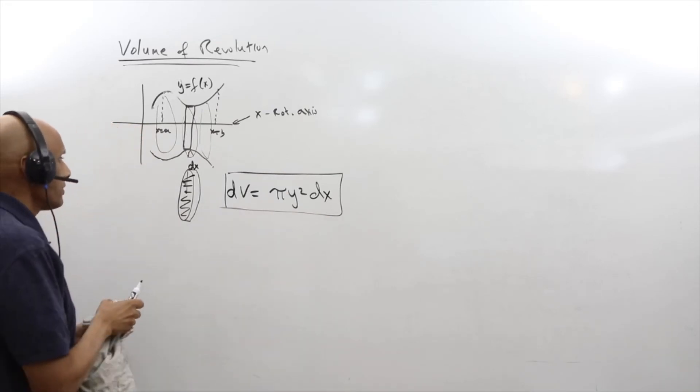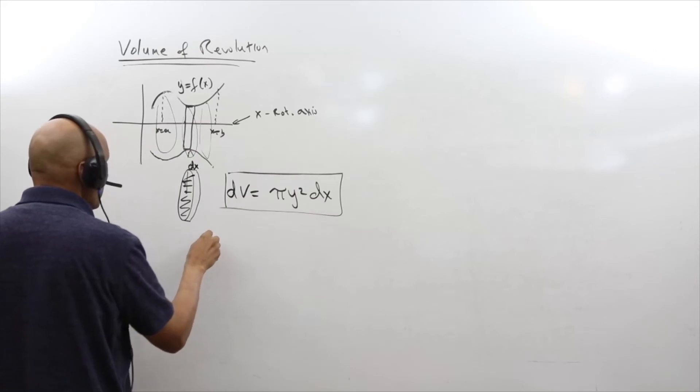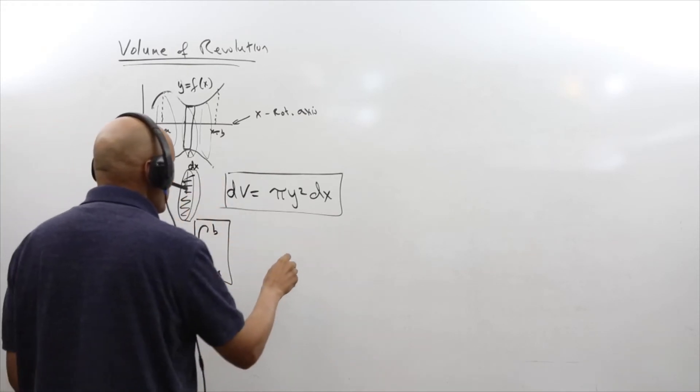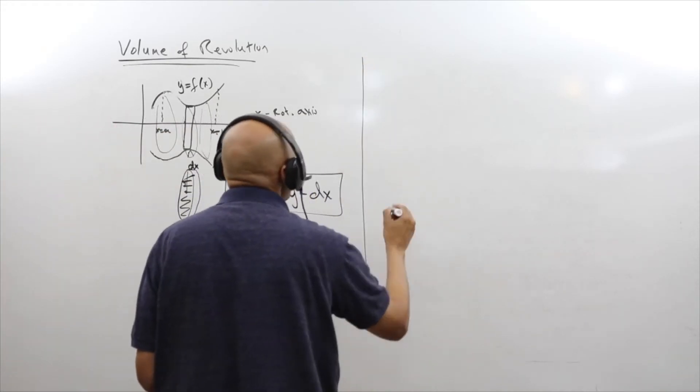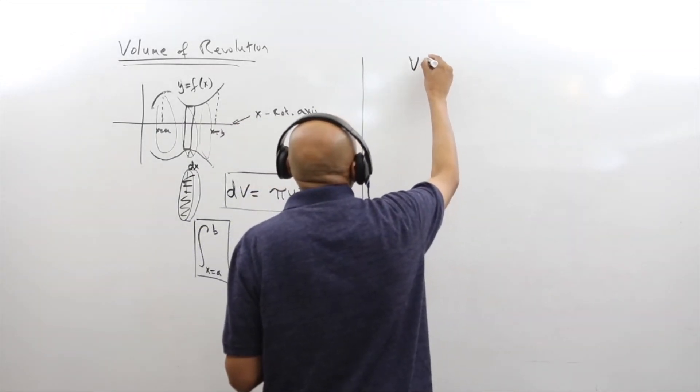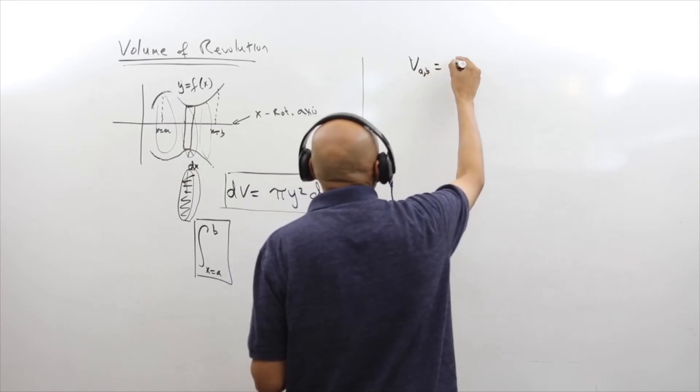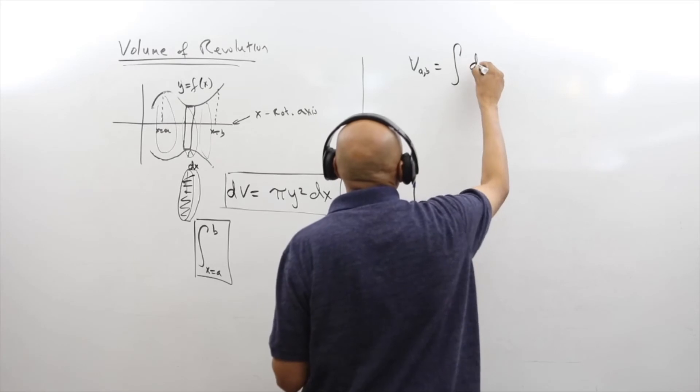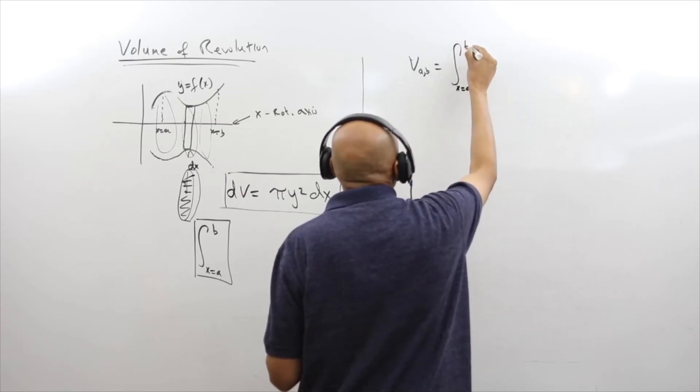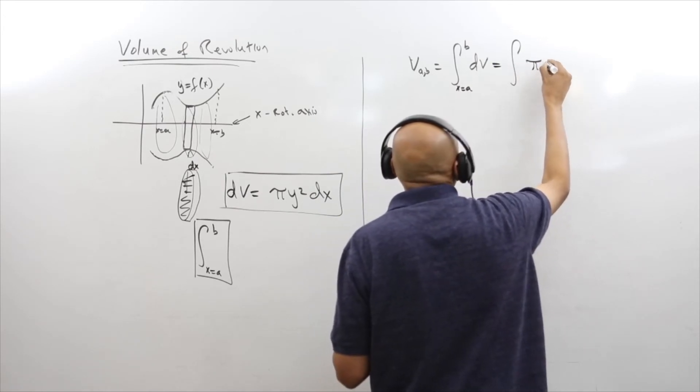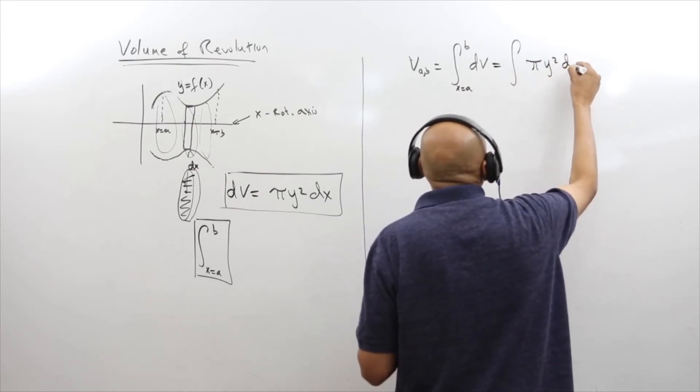And that's it. We now have a differential equation that tells us the volume differential. So we're going to integrate from a to b. Here's our integral operator acting on dV. We can say the total volume between a and b is equal to the integral of dV taken from a to b, so π y² dx.